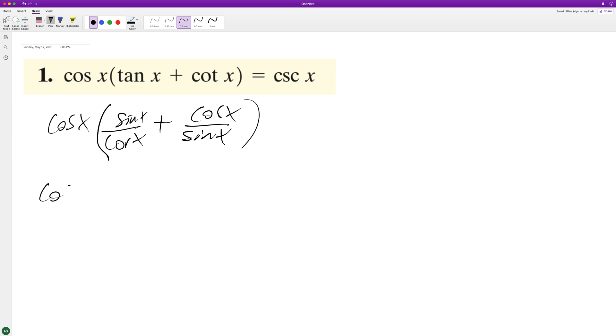So we multiply, we end up with cosine of x sine of x over cosine of x, plus cosine of x times cosine of x over sine of x. So if you look here, cosine cancels out. And we're left with sine x plus cosine squared x over sine of x.